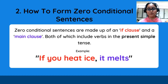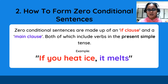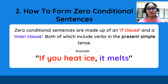How to form zero conditional sentences? Zero conditional sentences are made up of an if clause and a main clause, both of which include verbs in the present tense. Example: if you heat ice, it melts. 'Heat' is a present simple tense, and 'melts' is also a present simple tense.